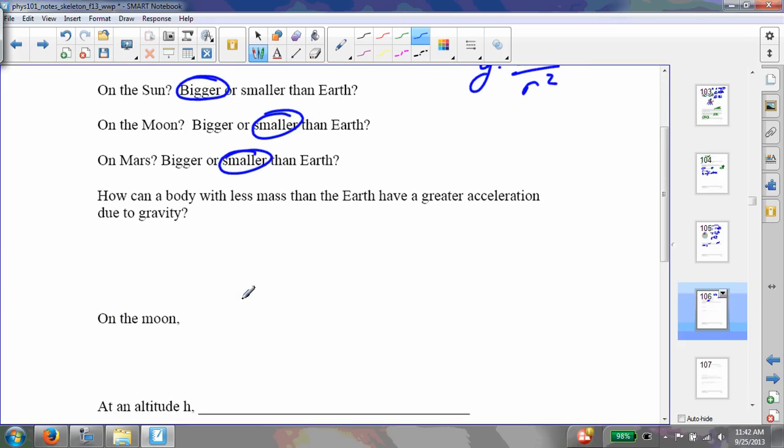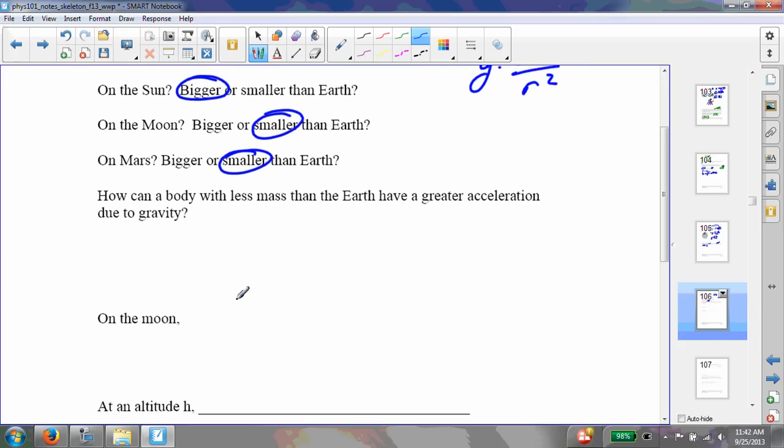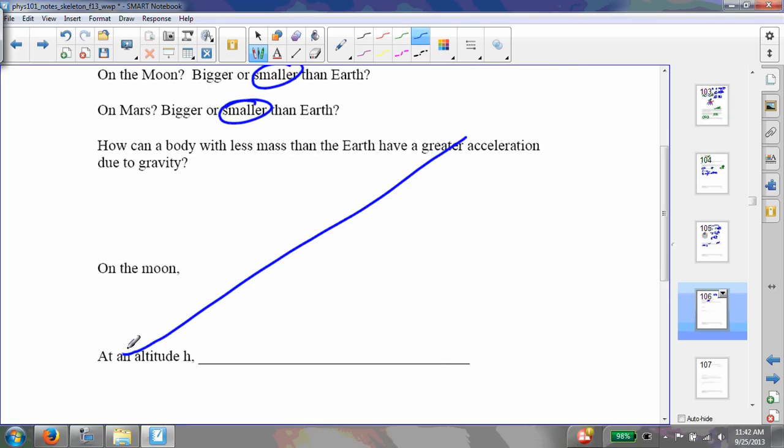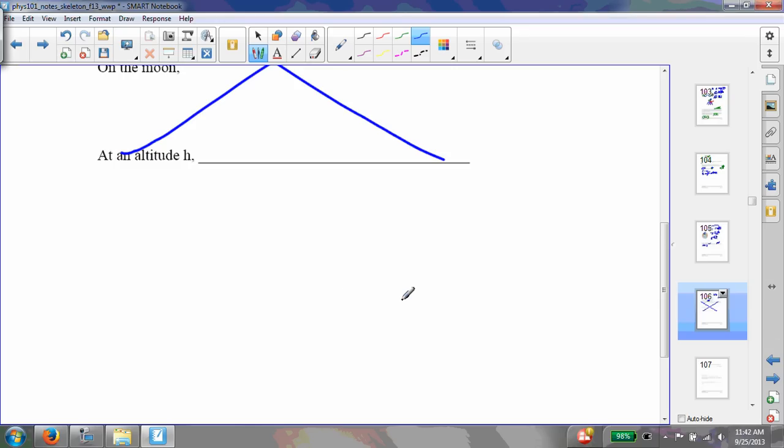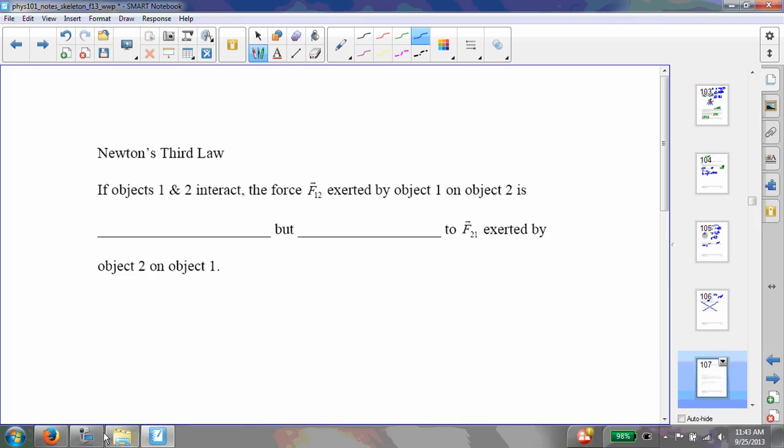So how can a body with less mass than the Earth have a greater acceleration? Actually, let's just skip this section altogether. We'll move on to the next part. But you do need to know that this acceleration due to gravity is related to the mass of the planet that you're standing on and the radius, and how we can find that from Newton's universal law of gravitation.